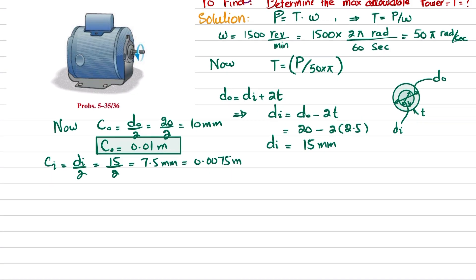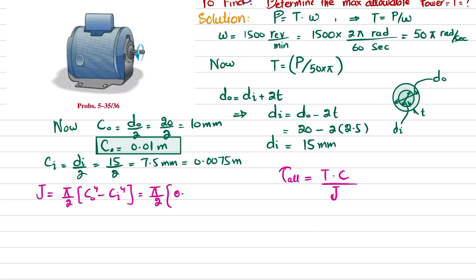We know that allowable shearing stress = T × c / J. We calculate the polar moment of inertia J for the hollow shaft: J = (π/2)(c_o⁴ − c_i⁴) = (π/2)(0.01⁴ − 0.0075⁴). Solving, J = 10.7379 × 10⁻⁹ m⁴.